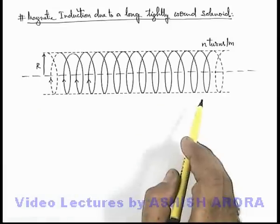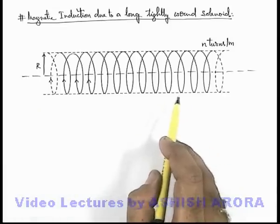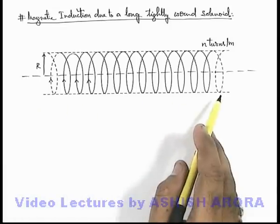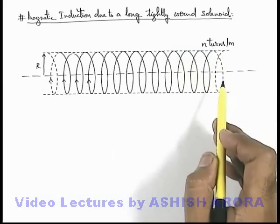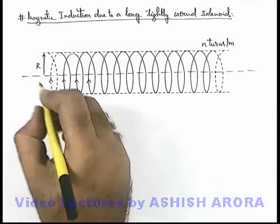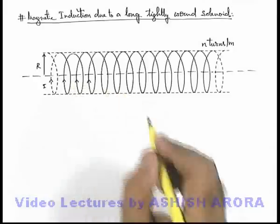Now if we have a look at the picture which shows a tightly wound solenoid, it is having a linear turn density n turns per unit length. In this situation, if a current i is flowing in the solenoid coil...